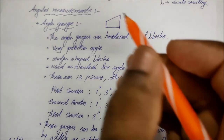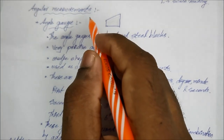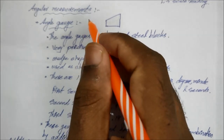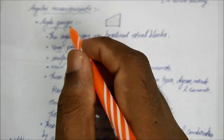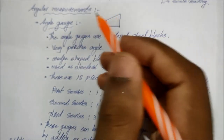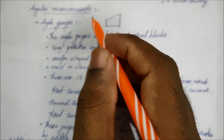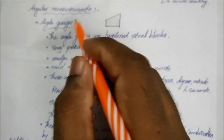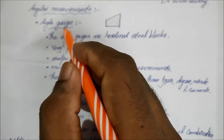Let's discuss angular measurements. Linear and angular measurements are the topic. Linear measurements use different tools such as the steel rule and slip gauge. Angular measurements use different instruments such as protractors and slip gauges.